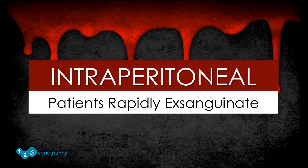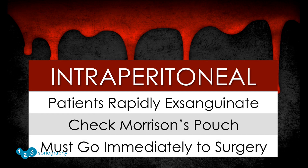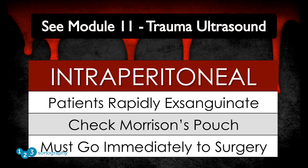Therefore, when an abdominal aortic aneurysm is identified, the examiner should always check Morrison's pouch for evidence of free fluid in the abdomen. If free fluid is found, the patient must go immediately to surgery. For more information regarding free fluid in the abdomen and locating free fluid in Morrison's pouch, see Module 11, Trauma Ultrasound.